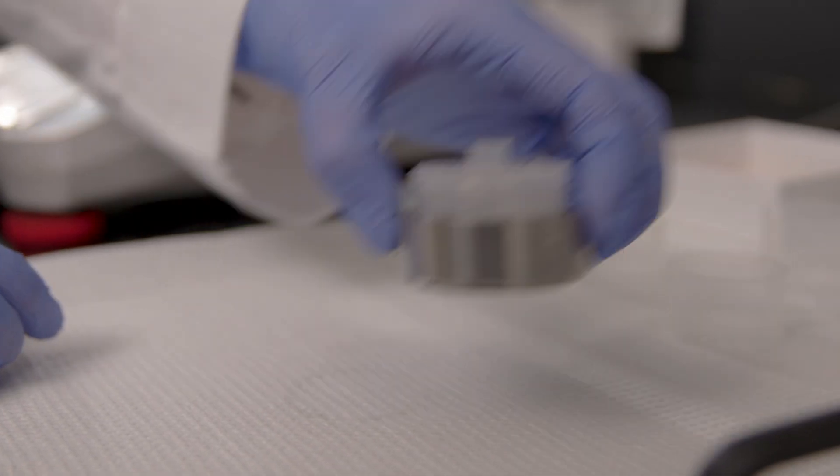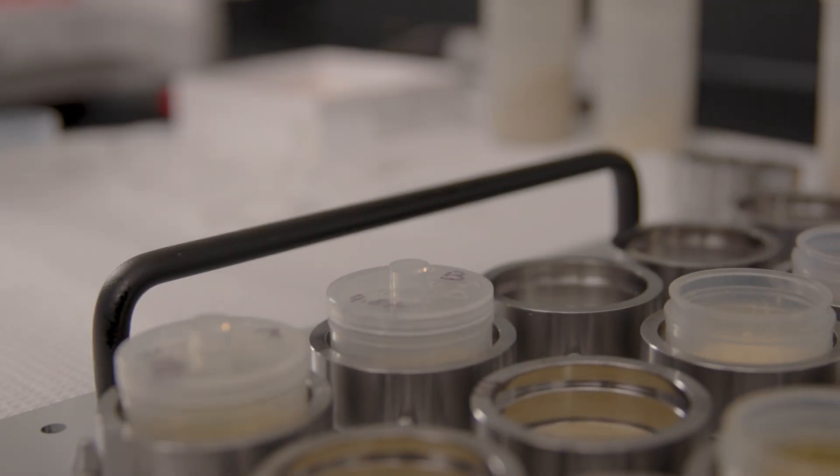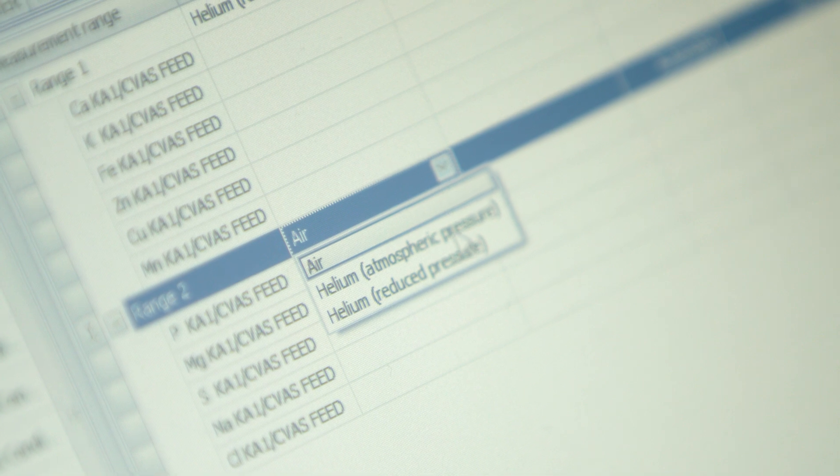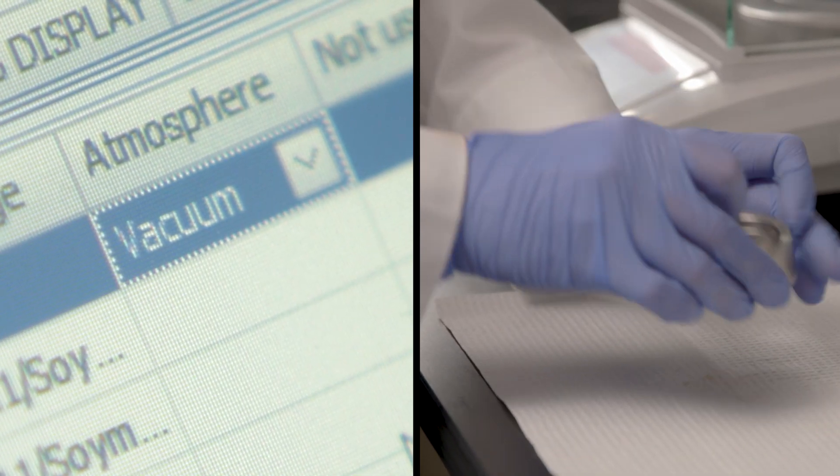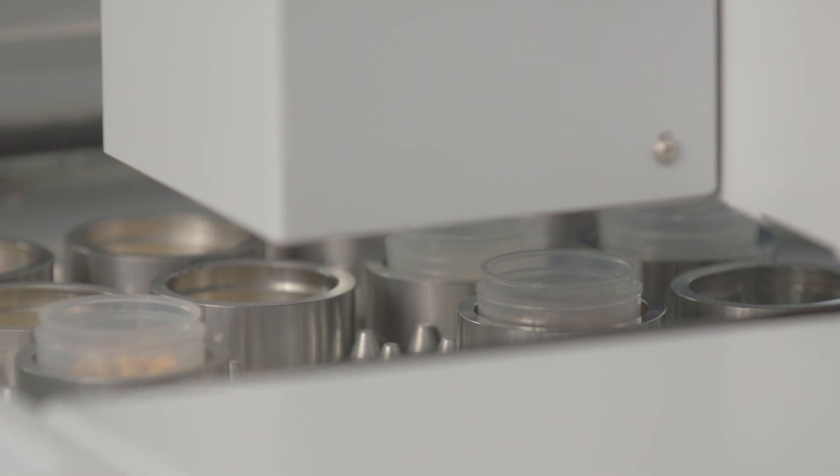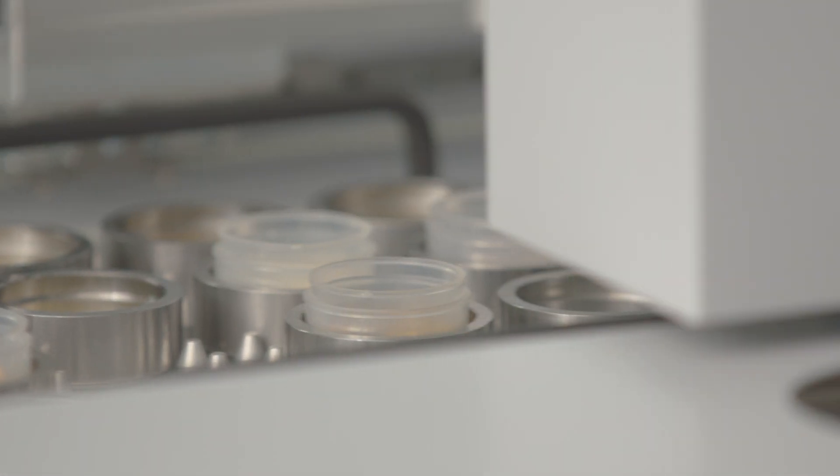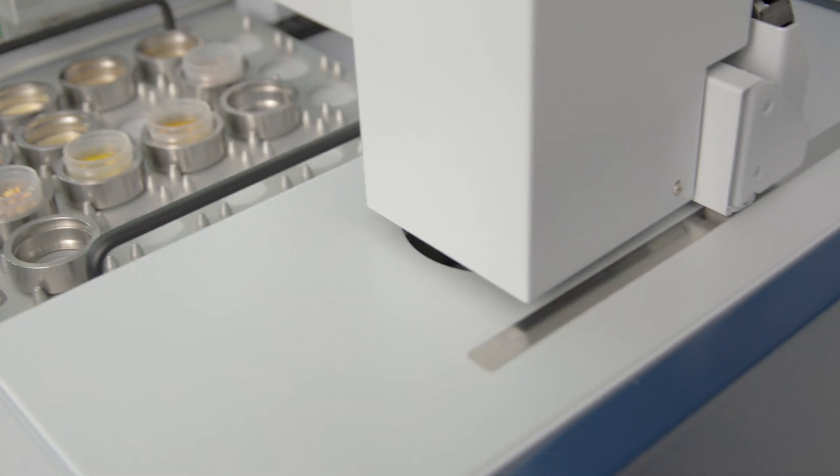For heavy elements, simply pour your samples into a powder cup and measure them in air mode. Helium mode is needed for measuring light elements. Pressing the sample allows you to measure in a vacuum. This affords even greater detection limits for light elements, reduces consumables and eliminates the need for helium.